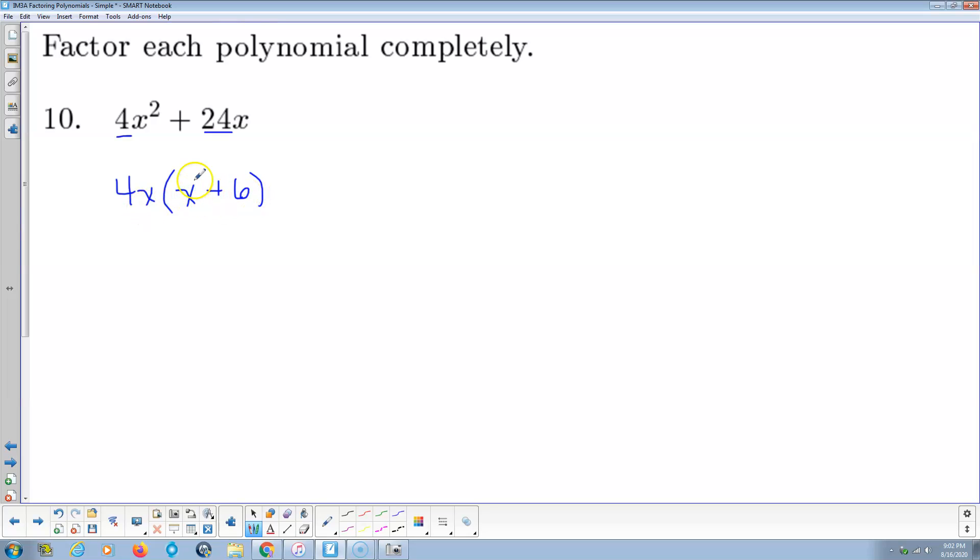Anytime I have x to the first added to a number, that's prime. There's no way to factor that. For a binomial, the only way to factor is difference of squares. And this guy is not being squared. Whether that's a perfect square or not doesn't matter. If this guy's not a perfect square, it's not a difference of squares. We're done. Bam.